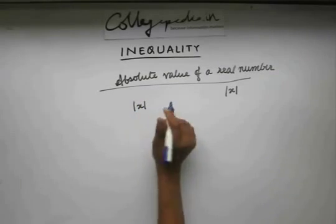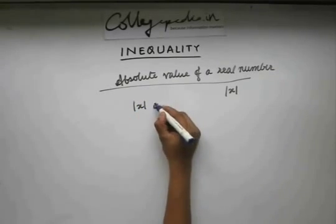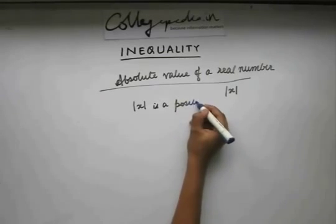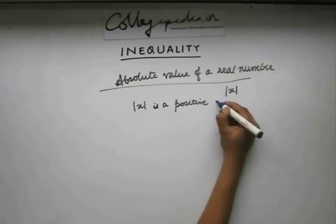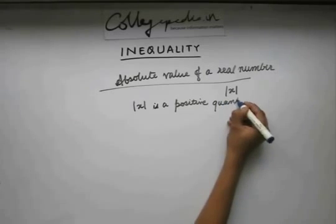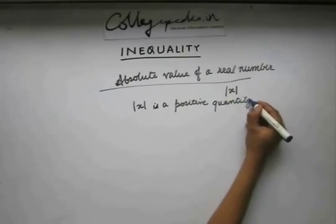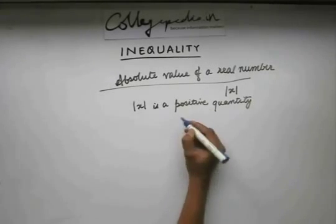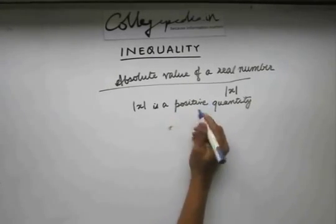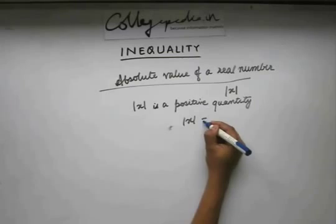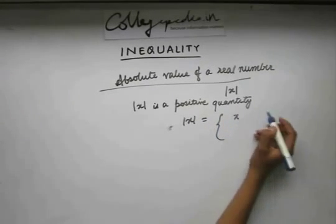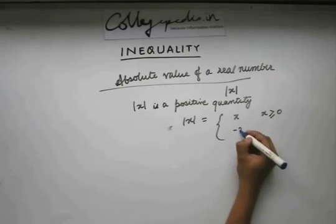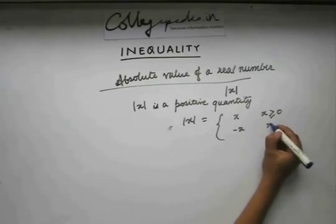Mod x is always a positive quantity. Since it is a positive quantity, it is equal to x when x is positive, and it is equal to minus x when x is negative.